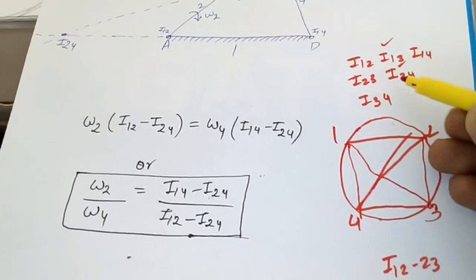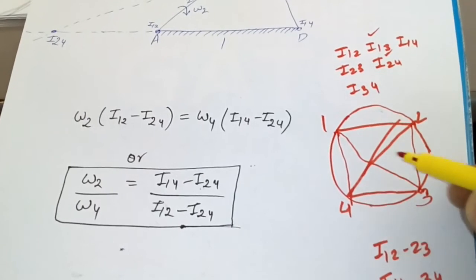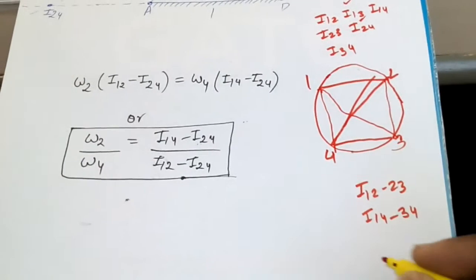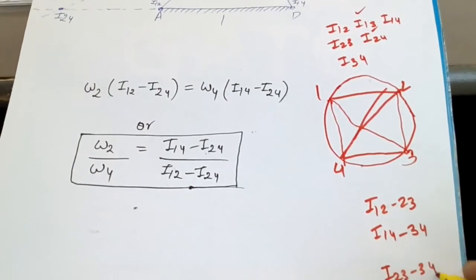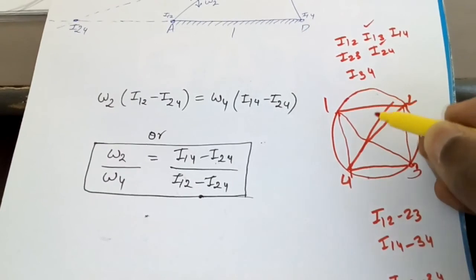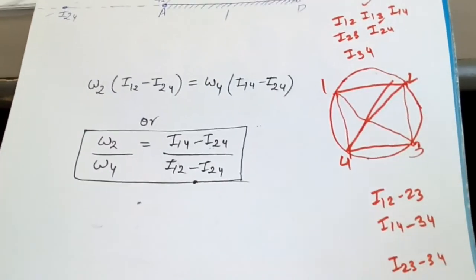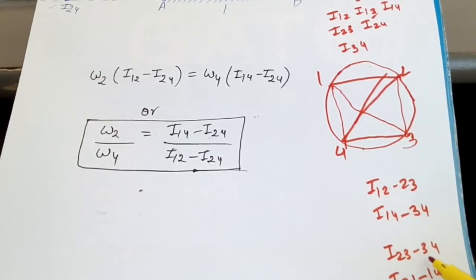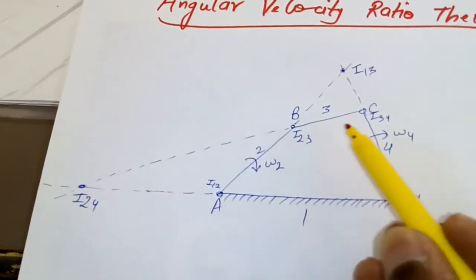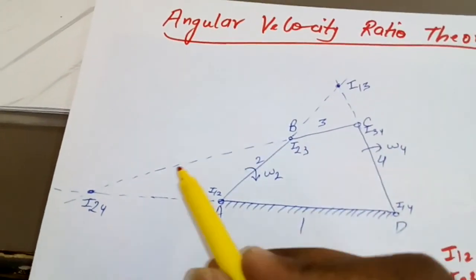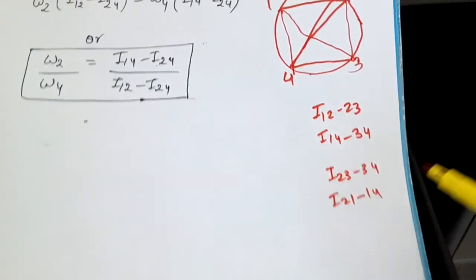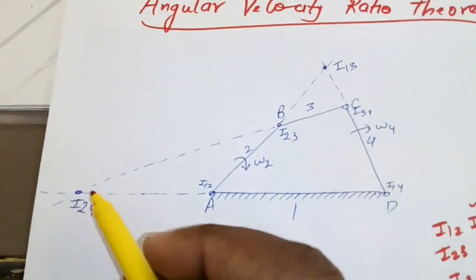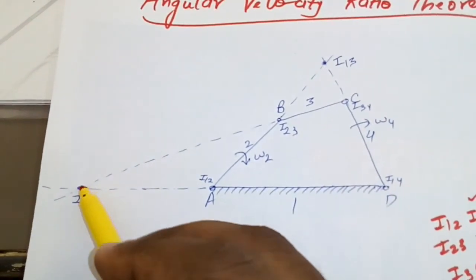Similarly to find i24: you can go 2→3→4 or 2→1→4. So extend the line through i23 and i34, and also extend the line through i12 and i14. Wherever these two lines intersect is the point i24. Now you have found all 6 I-centers.